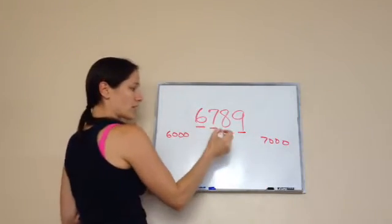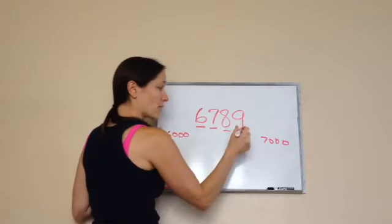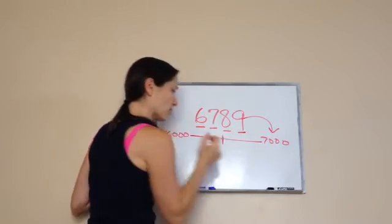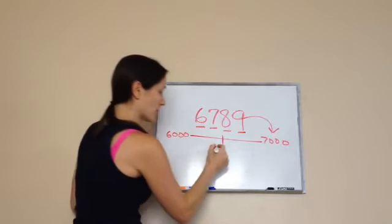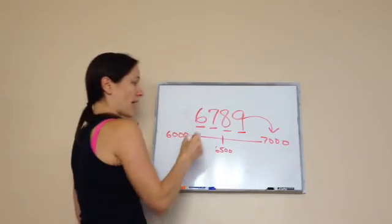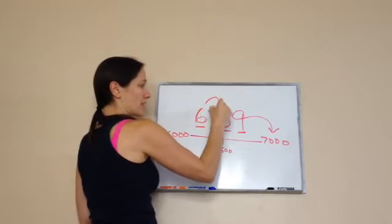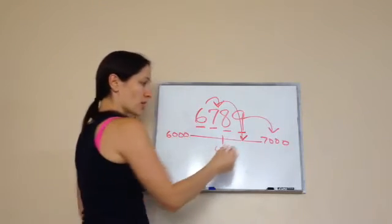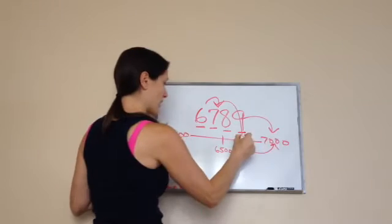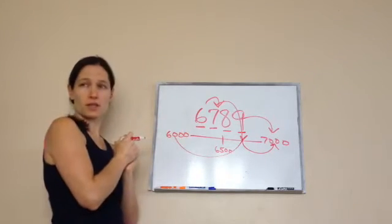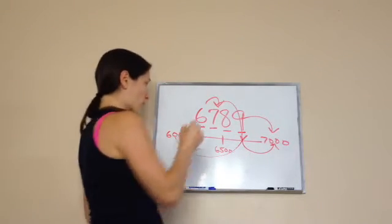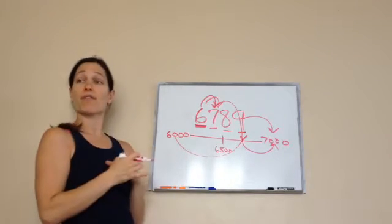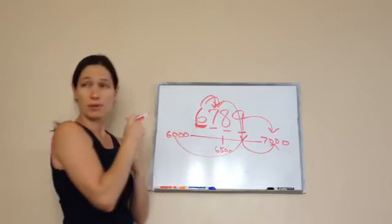And so, 6,789 would be closer to 7,000 because what would be in the middle? 6,500. And 6,789 would be somewhere right in here. So, it definitely is closer to 7,000 rather than 6. So, remember you always look to the number to the right and if it's 5 or higher, you round this up. Do you remember that rule?